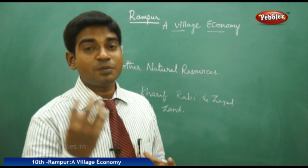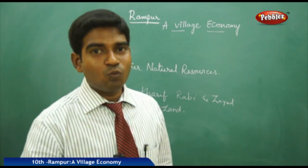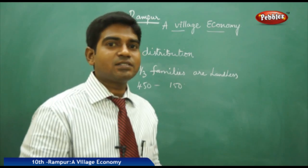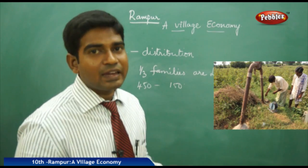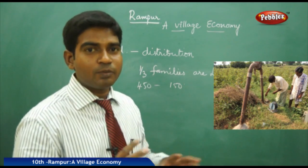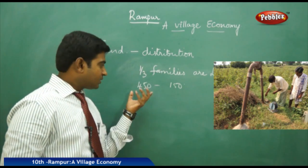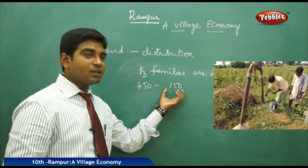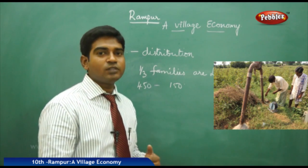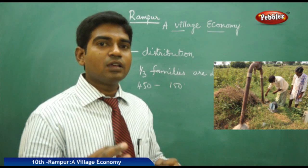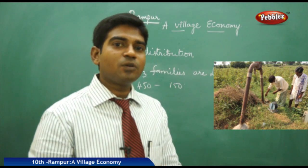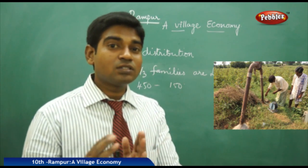Regarding land distribution in Rampur: there are 450 families staying in the village, and one-third of them — about 150 families — do not own any land. There are 2660 acres of land owned among 450 families, and 80% of the land is held by 300 families. For example, Govind has 2.25 acres of land and three children; after dividing it, each child gets only 0.75 acres, forcing them to work for others or seek alternative livelihoods.